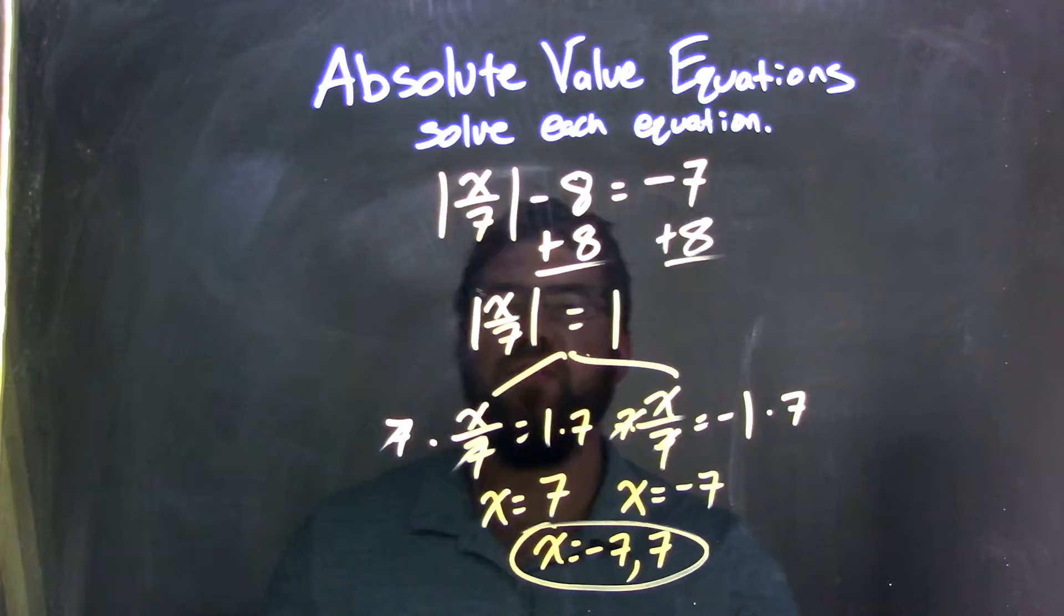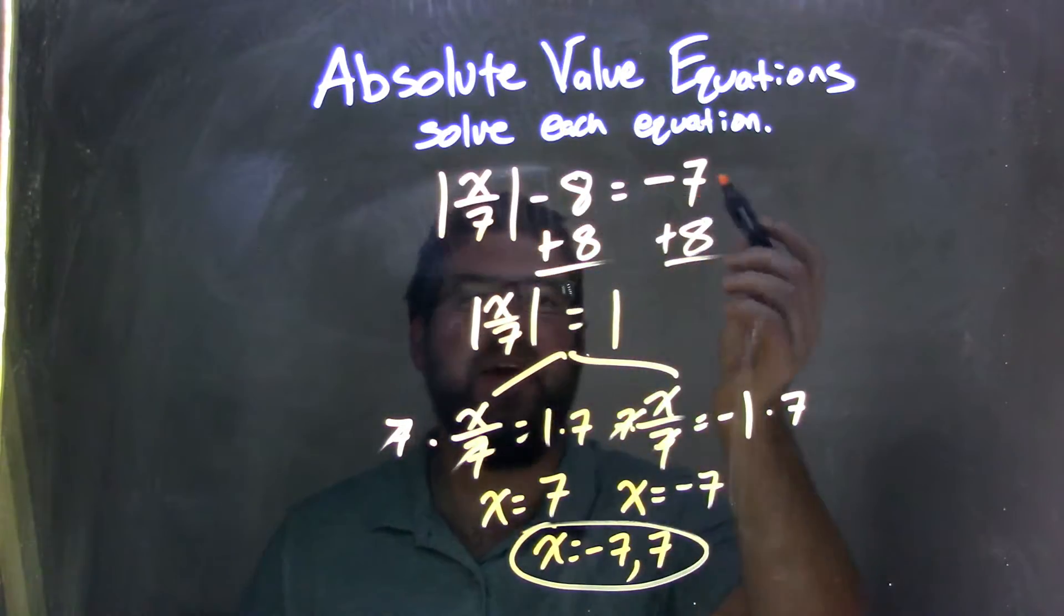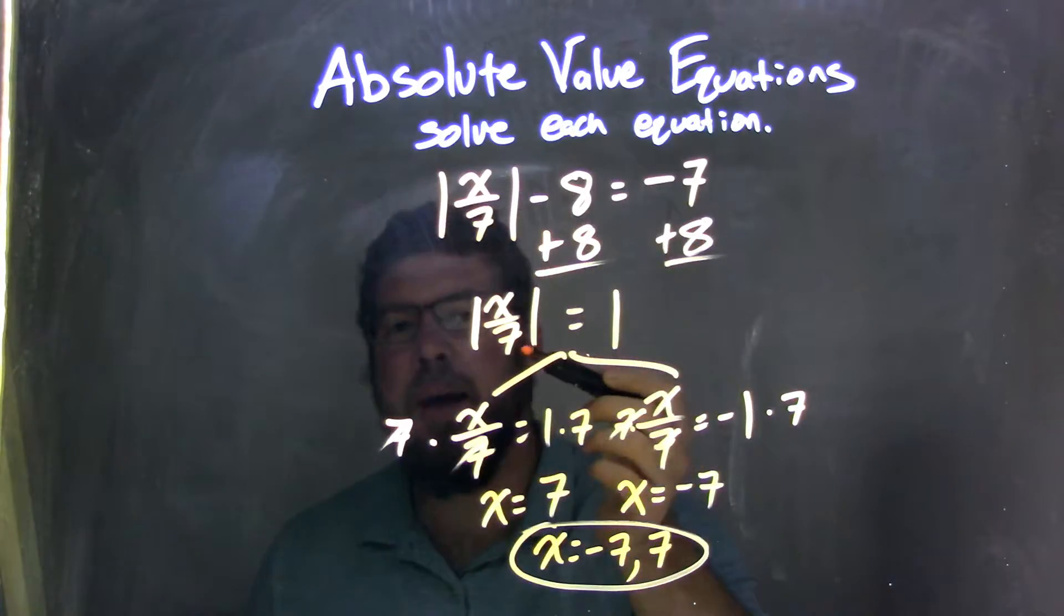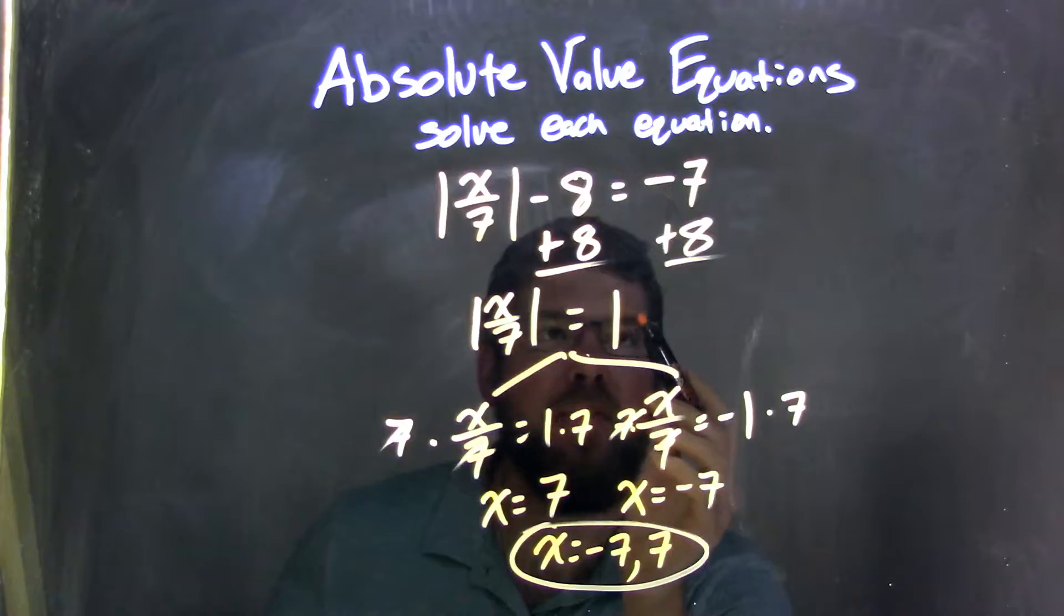So let's recap. We started with the absolute value of x over 7 minus 8 equals negative 7. I added 8 to both sides, isolating the absolute value. So we have the absolute value of x over 7 equals a positive 1.